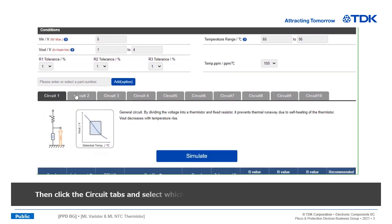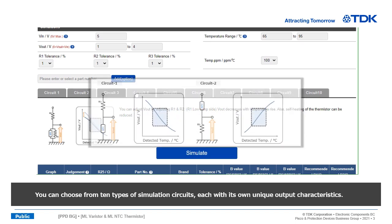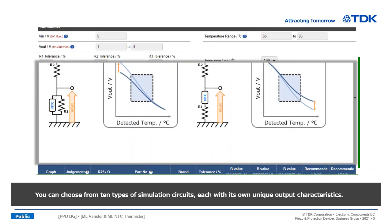Then click the circuit tabs and select which circuit to simulate. You can choose from 10 types of simulation circuits, each with its own unique output characteristics.